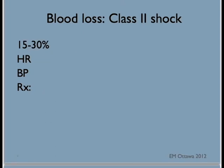In class 2 shock, the patient has lost about 15–30% of their blood volume. The heart rate will remain high and now the blood pressure will start to fall. The pulse pressure — that is, the difference between systolic and diastolic blood pressure — will narrow. In terms of treatment, it is still crystalloid fluid until both the blood pressure and heart rate normalize.